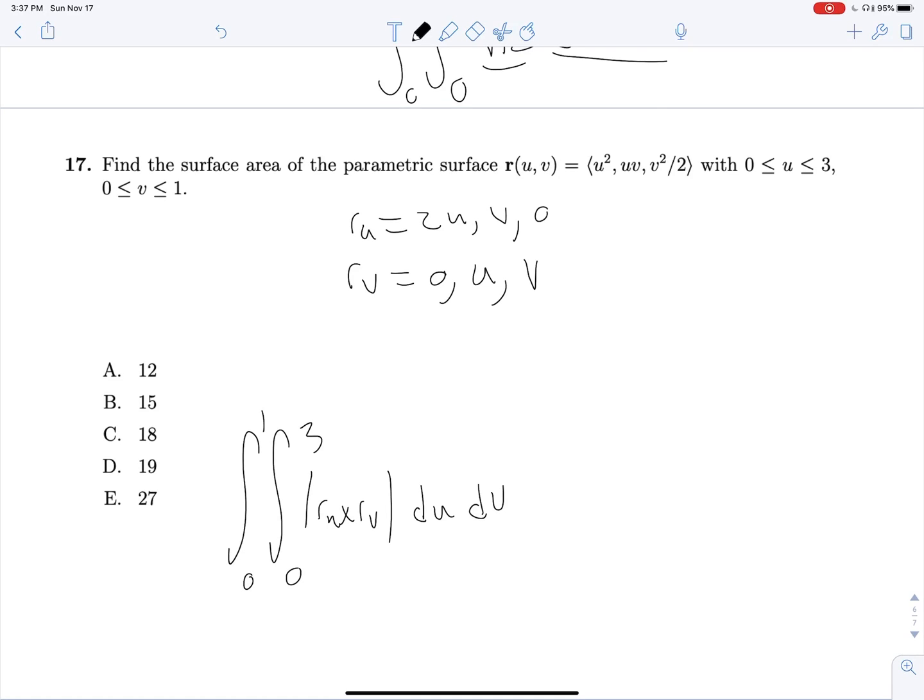So now we can take our cross product, which is going to be V squared, comma, 2UV, comma, 2U squared. And our magnitude of this is going to be root V to the fourth plus 4U squared V squared plus 4U to the fourth. And this is pretty scary, but whenever you see something like this, recognize that they're always being relatively nice to us and we can always simplify this down. So this is going to be V squared plus 2U squared, squared. That works out. And so we can cancel our square root with that second power and RU cross RV will just be V squared plus 2U squared.